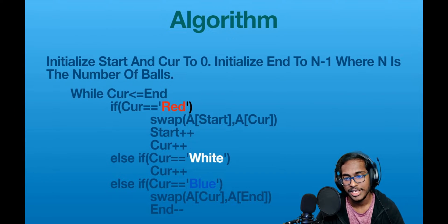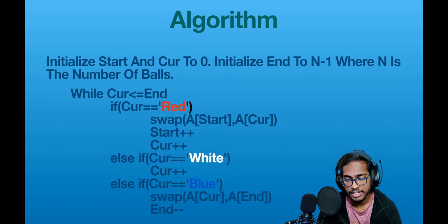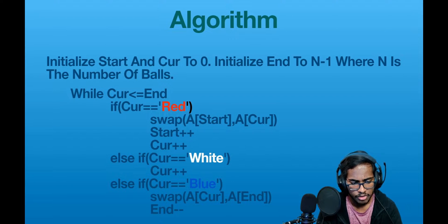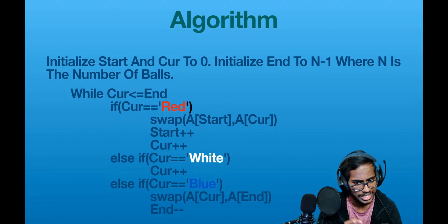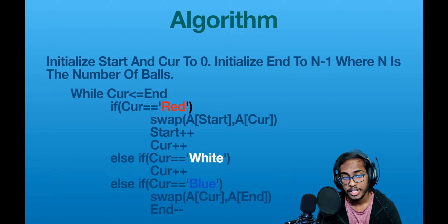First, let us initialize three pointers named start, cut, and end. Start and cut will both begin at index zero, and end will begin at the final index n-1, where n is the number of balls. We're going to keep start and end in place initially and keep moving the cut pointer, swapping elements when needed. We want all red balls first, then white, then blue.